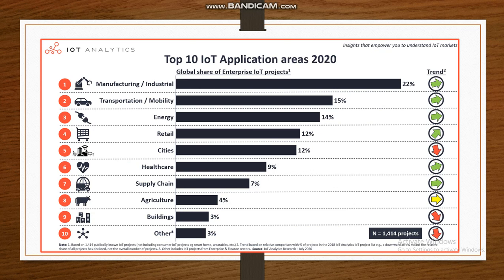IoT applications span different verticals of industries, ranging from agriculture to healthcare, smart cities, energy, transportation, manufacturing, and industrial applications. These applications cover almost every possible sector of industry, so this domain will open a lot of opportunities for you in the future if you excel in it.